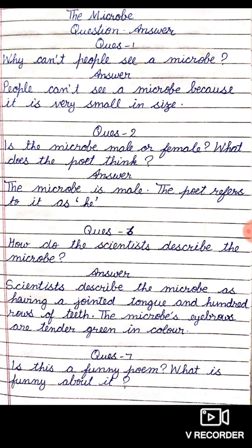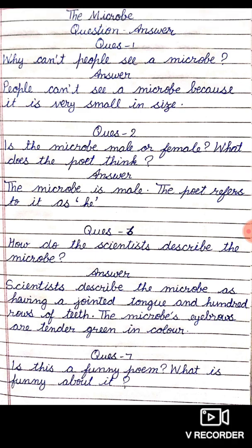Question six: How do the scientists describe the microbe? Scientists describe the microbe as having a jointed tongue and hundred rows of teeth. The microbe's eyebrows are tender green in color.